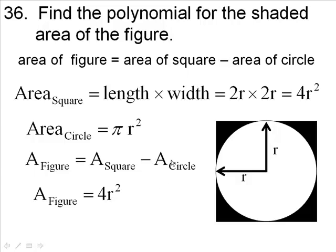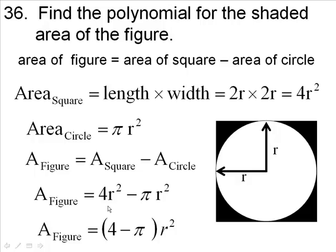I write 4r squared minus πr squared. This is the polynomial we were talking about. If I factor an r squared out of this, I'll eliminate the r squared here and here. I can write it out front or behind it. When you take the r squared out, you're left with a 4 here and a minus π here, so this is the formula for the shaded area of the figure: (4 - π)r squared.